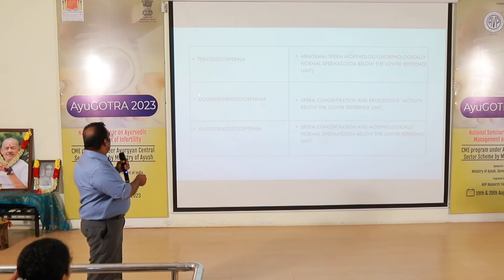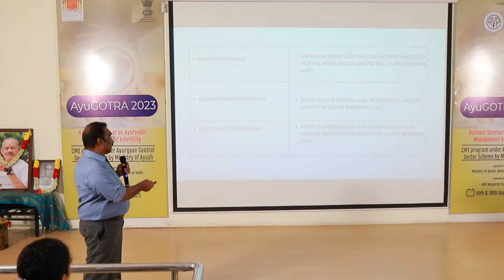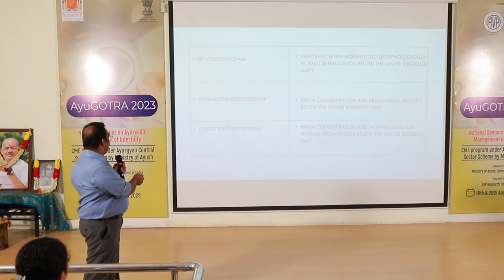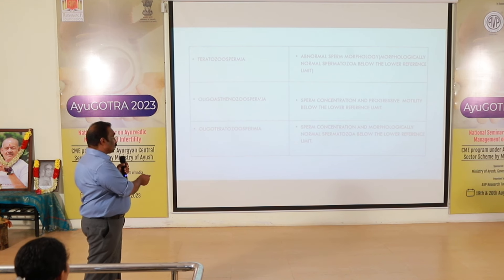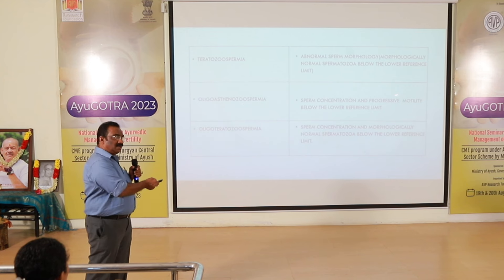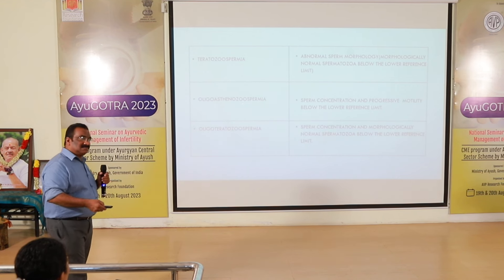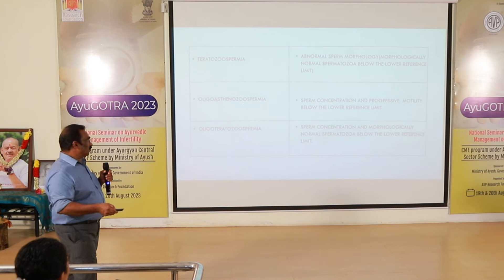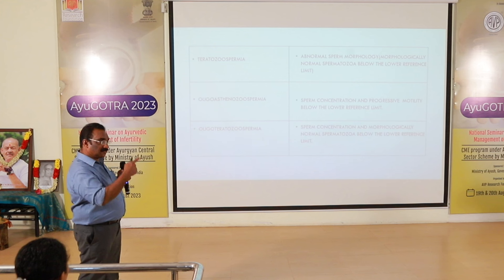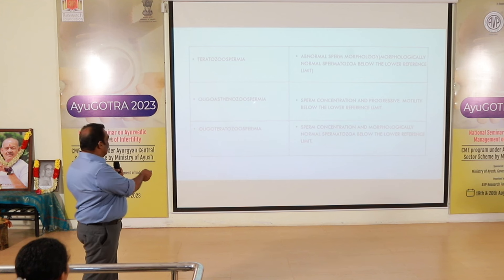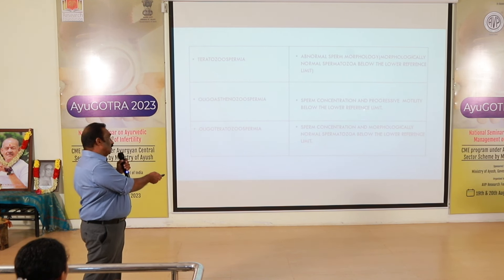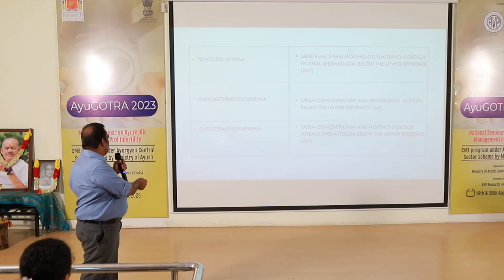Oligoasthenospermia means sperm concentration and progressive motility are both below the lower reference limit. This condition is commonly encountered, and severe varicocele is one of the causative factors.